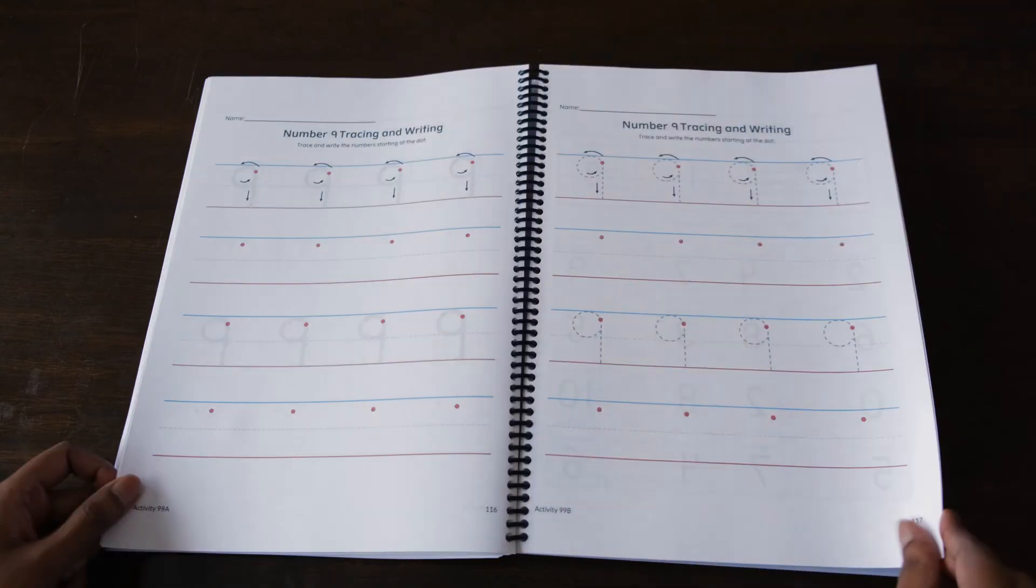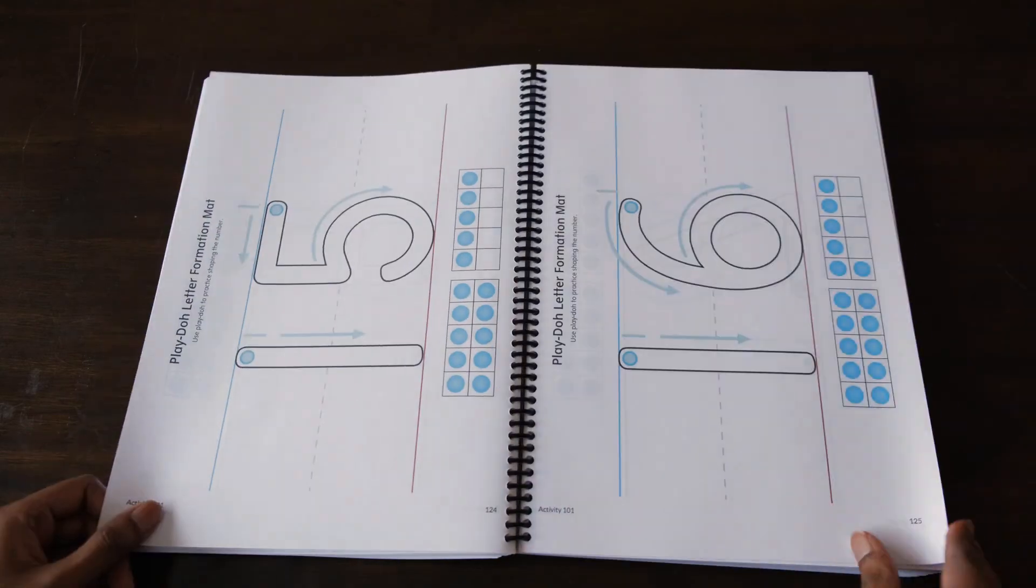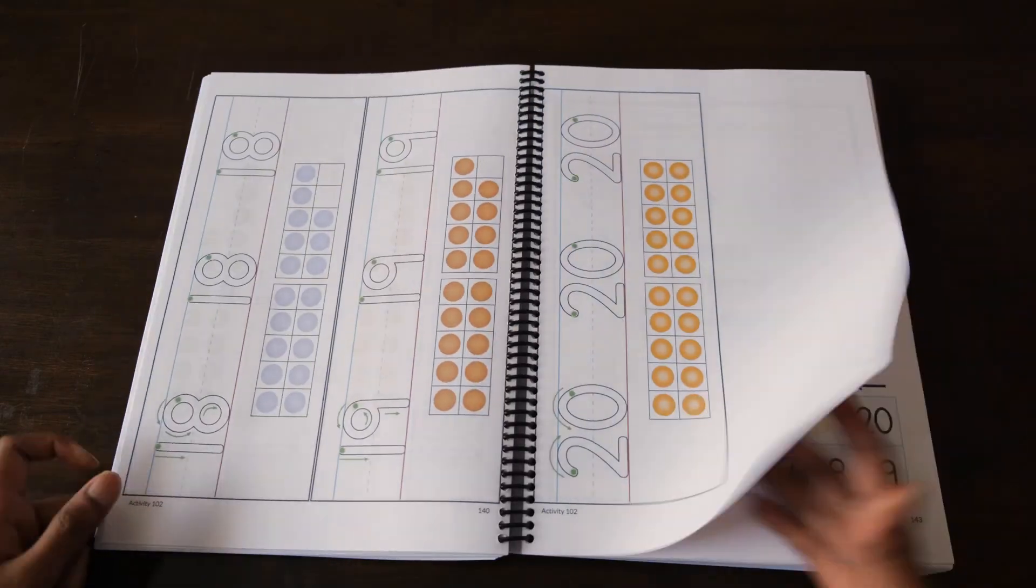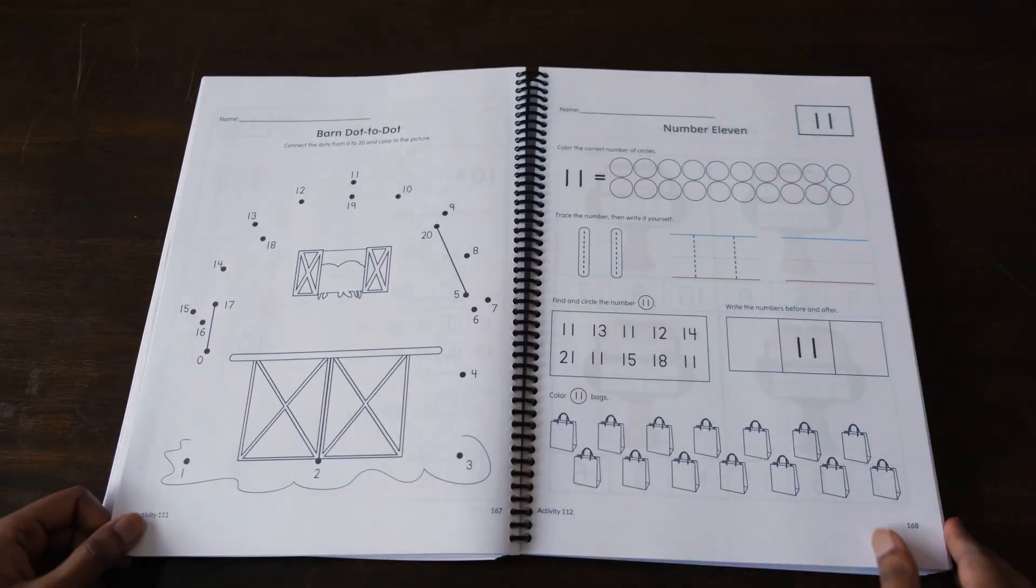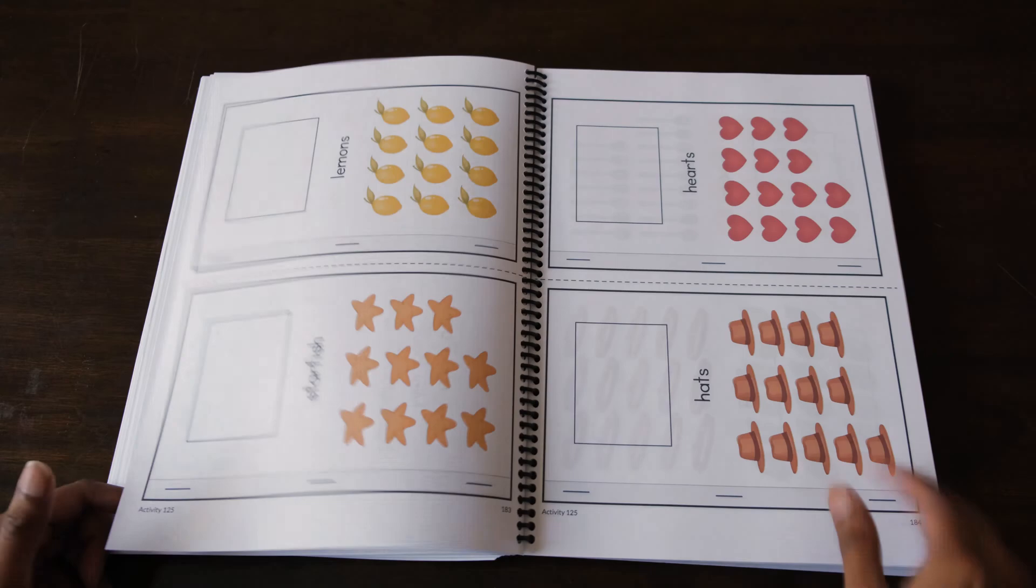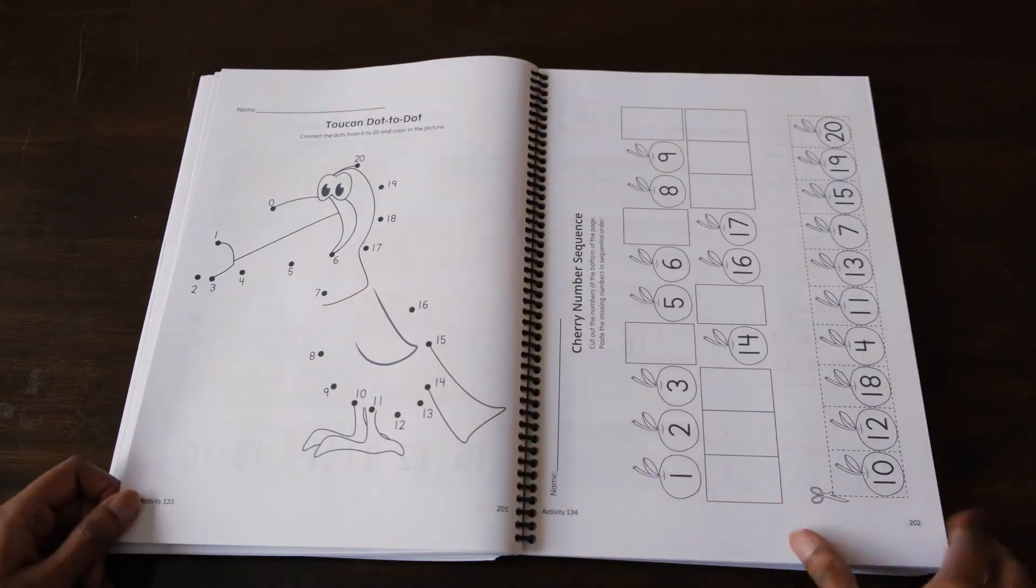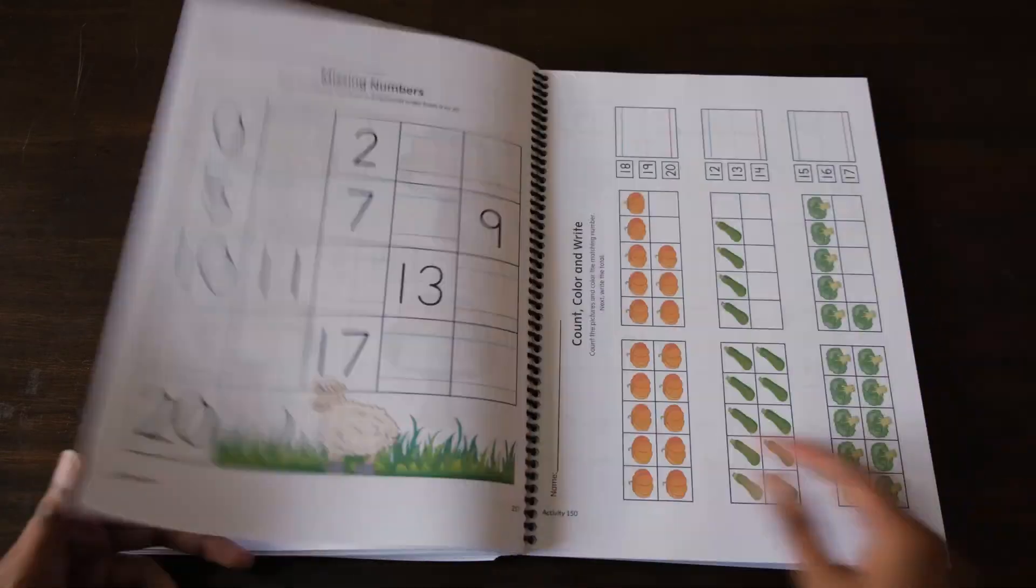We used this curriculum for my son. We were able to get through the preschool level as well as both kindergarten levels before he was 4. My daughter is 4 now and has nearly finished the first kindergarten level, and will be moving on to the next soon.